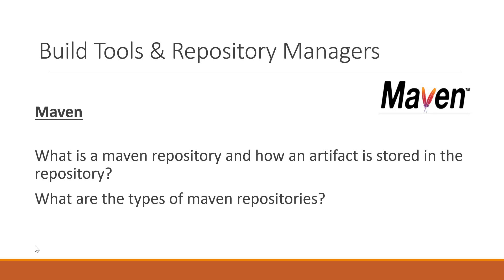In this video, we will see what is a Maven repository and how an artifact is stored in the repository. We would also see what are the types of Maven repositories. A Maven repository is a storage area in which the built artifacts, their dependencies, and third-party libraries will be stored.